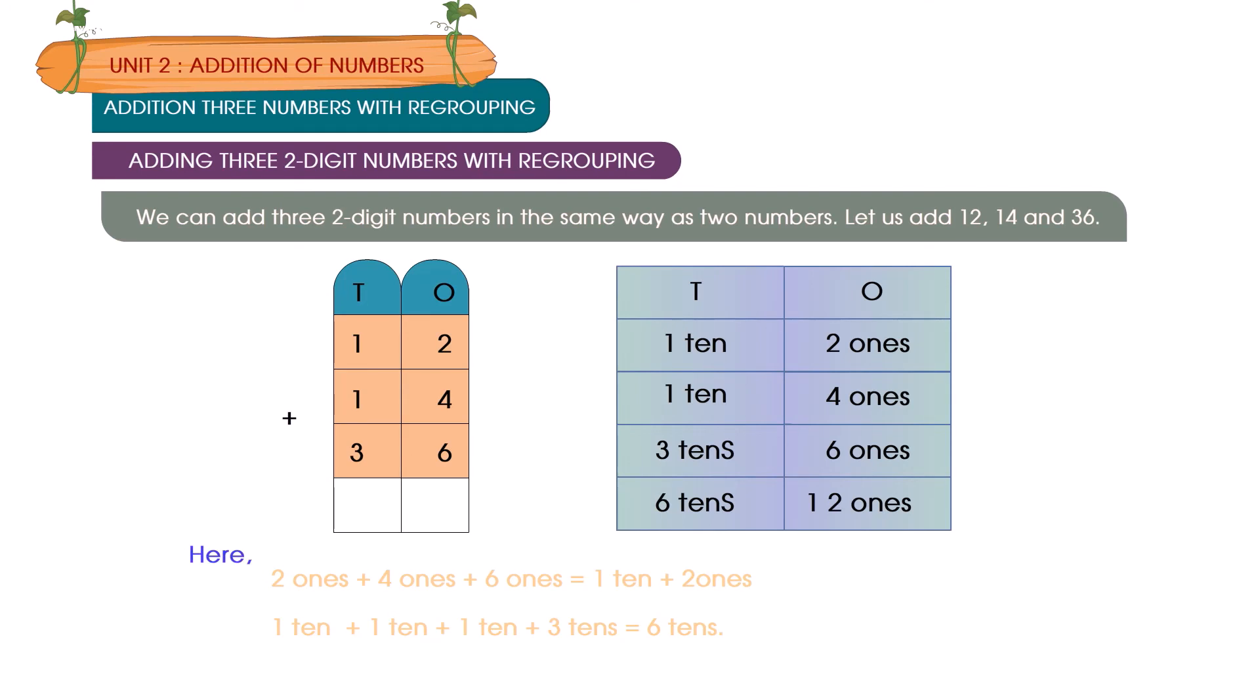Here, 2 ones plus 4 ones plus 6 ones is equal to 1 ten plus 2 ones. 1 ten plus 1 ten plus 1 ten plus 3 tens is equal to 6 tens.